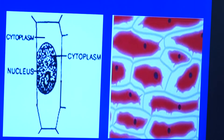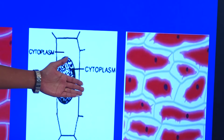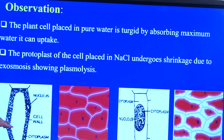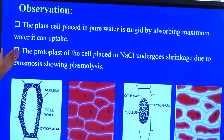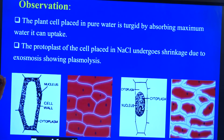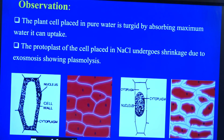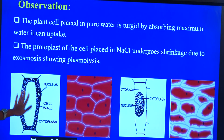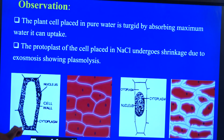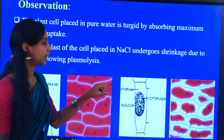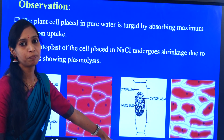This is the observation we studied. With the help of plasmolysis, the protoplast of the cell placed in NaCl undergoes shrinkage due to the exosmosis process, showing plasmolysis. This is the form of plasmolysis — we can observe the cell wall, and the turgid cell transforms into a plasmolyzed cell showing the separation of the protoplasm from the cell wall.